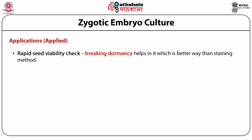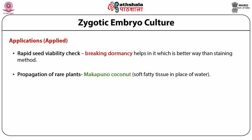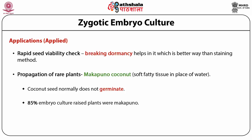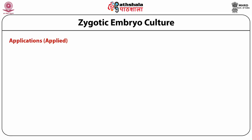A very interesting application is the propagation of rare plants. Makapuno is a variety of coconut in which, instead of coconut water, the central cavity is filled with a soft, fatty tissue, which is a delicacy in some parts of the world. However, makapuno seeds cannot germinate. It was found that culturing the excised embryo of makapuno resulted in 85% of the raised plants being truly makapuno. Thus, embryo culture provides a new approach to multiplying this rare plant that yields a high percentage of makapuno nuts.